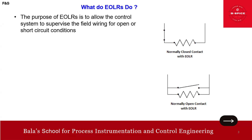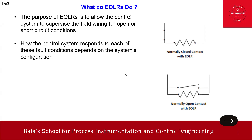The purpose of EOLR is to allow the control system to supervise the field wiring for open and short circuit conditions. The typical normally closed contact is in series, and the normally open contact is in parallel. However, how the control system responds to each fault condition depends on the system configuration.